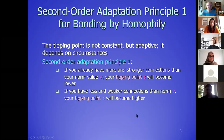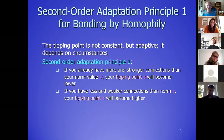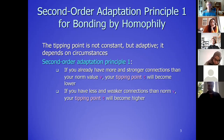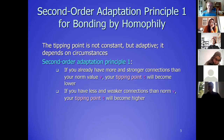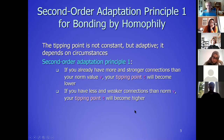We have two second-order principles here. The first one: if you already have more and stronger connections than some norm you set for yourself, your tipping point will become lower — meaning you'll become more critical about whether or not you will connect to somebody. And if you have not many connections, your tipping point will be higher in that sense that you will be less critical. I didn't find this in the literature but I think it has some plausibility, perhaps because of the time you have for connections.